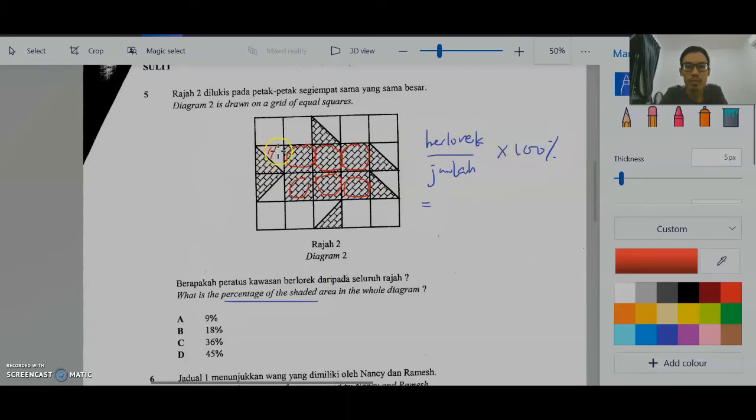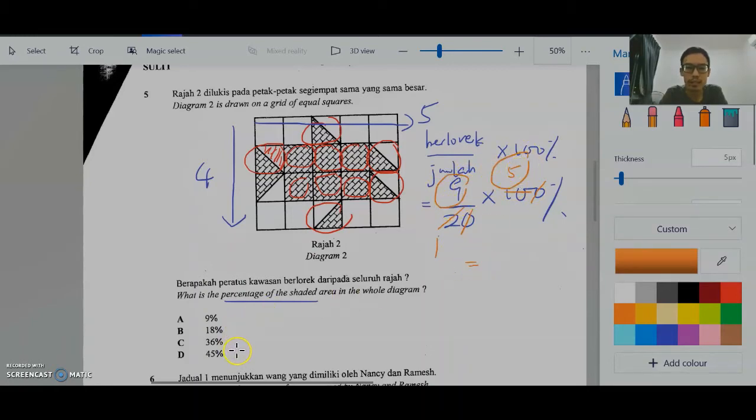2 triangles, when you put them together, it will form a square. 2 segi 3 letak bersama akan membentuk 1 segi 4. So, sini ke-7, ke-8, ke-9. 9 yang berlorek. 9 shaded boxes. Jumlah ada berapa? Menegak ada 4. Melintang ada 5. So, 5 times 4 is 20. 9 over 20 times 100%. Cross 1, 0. 2 dan 10. Sifir 2 bagi 2. 1 bagi 2, 5. 9 times 5 is 45%.